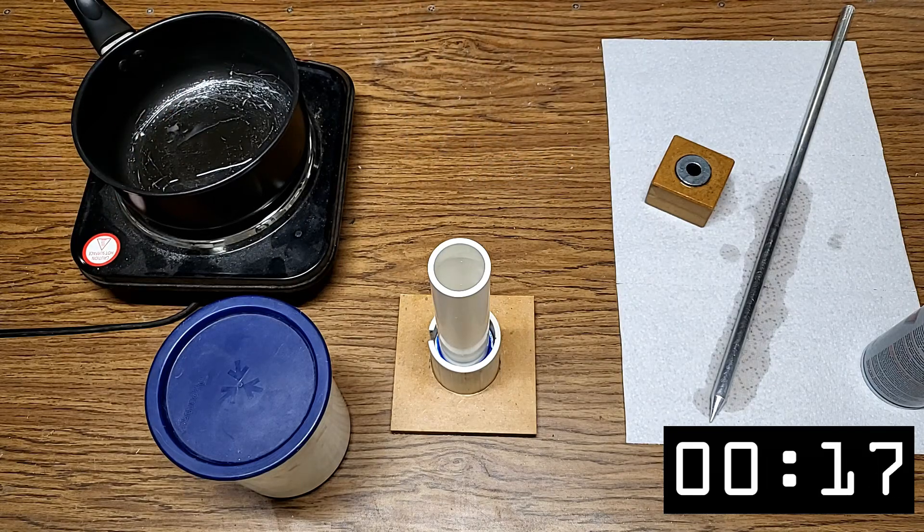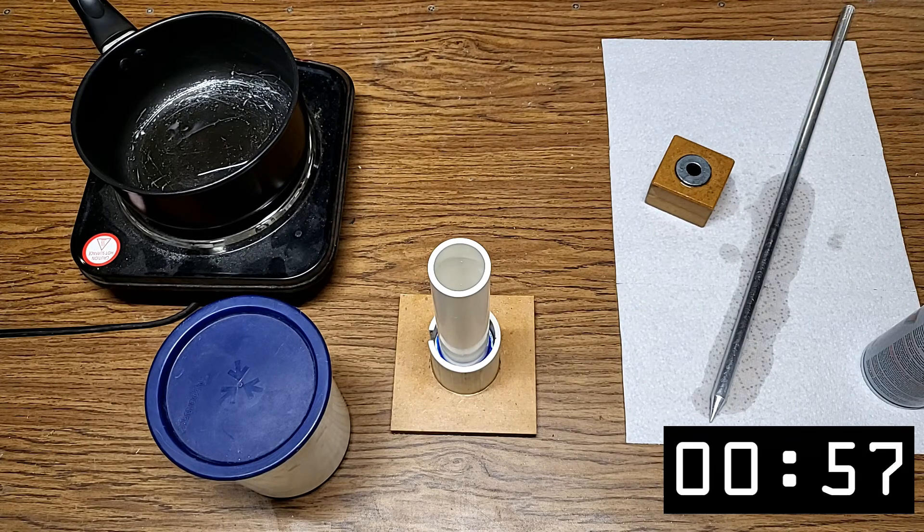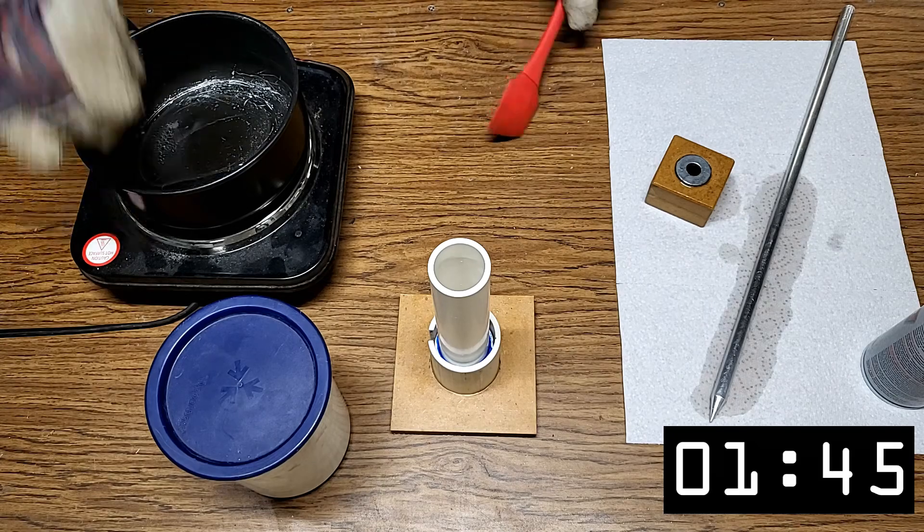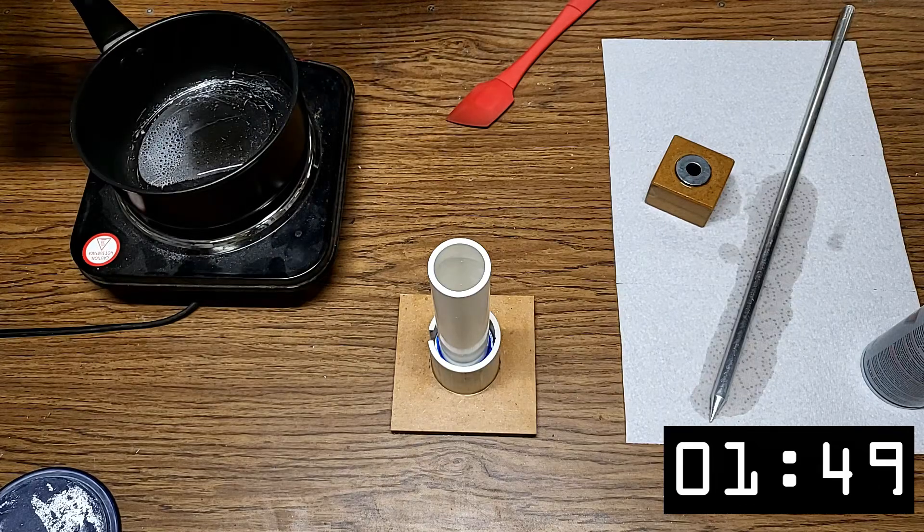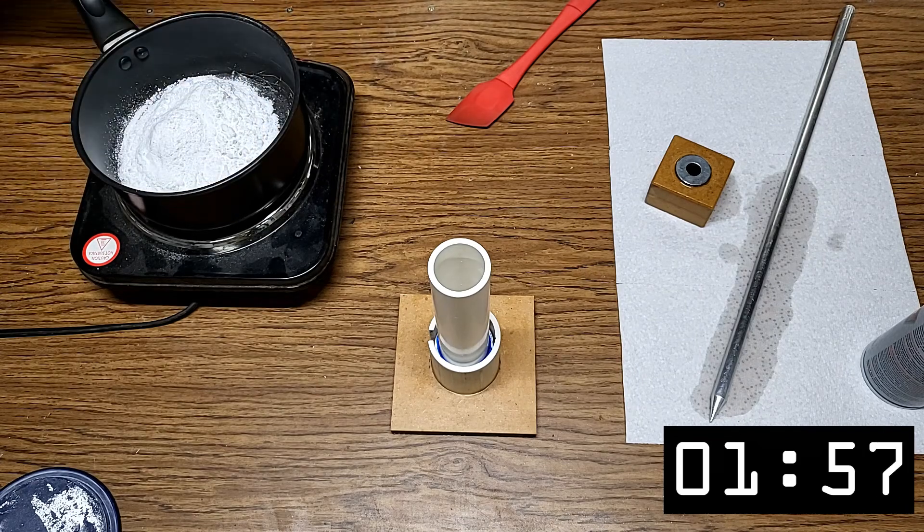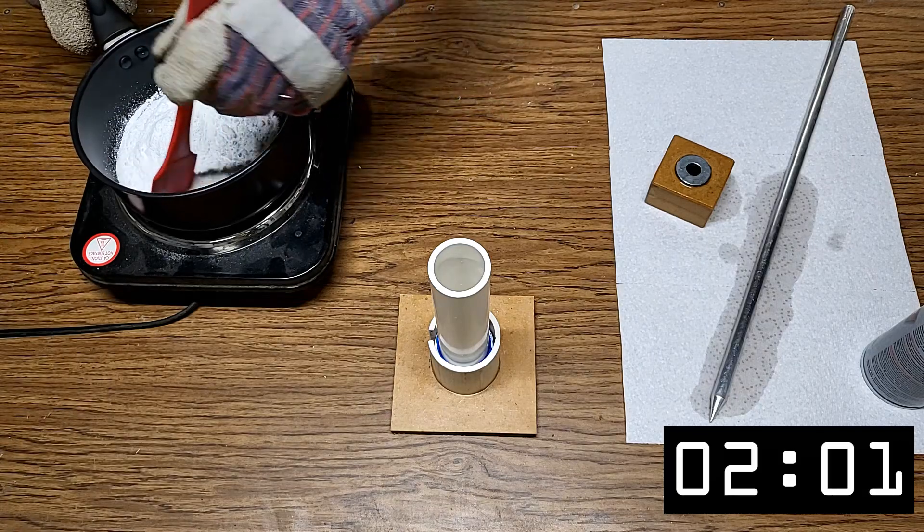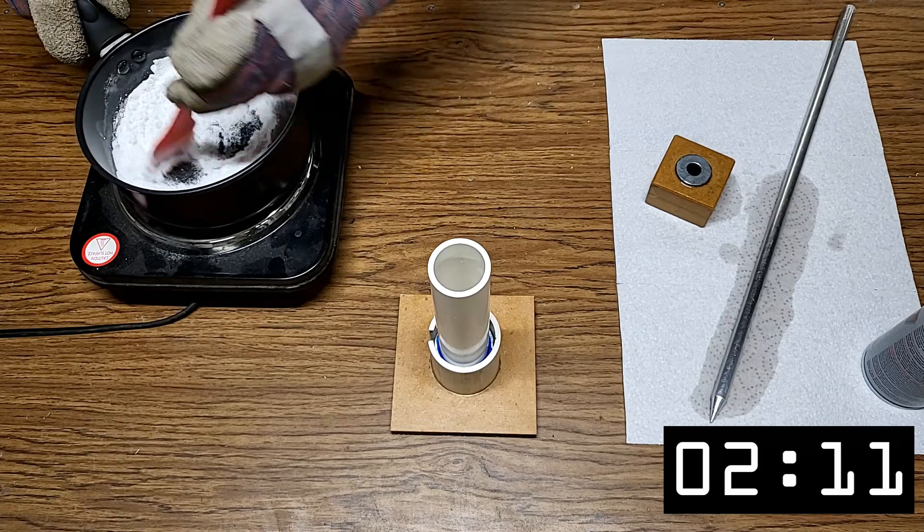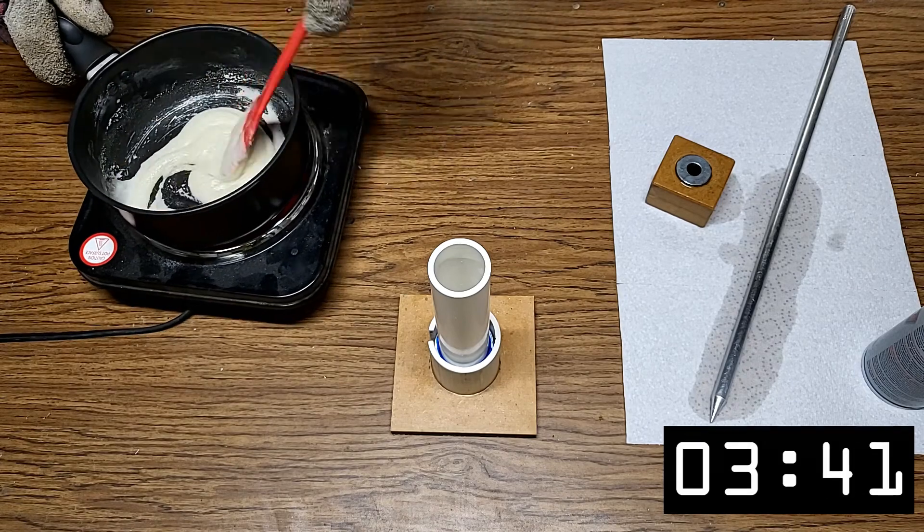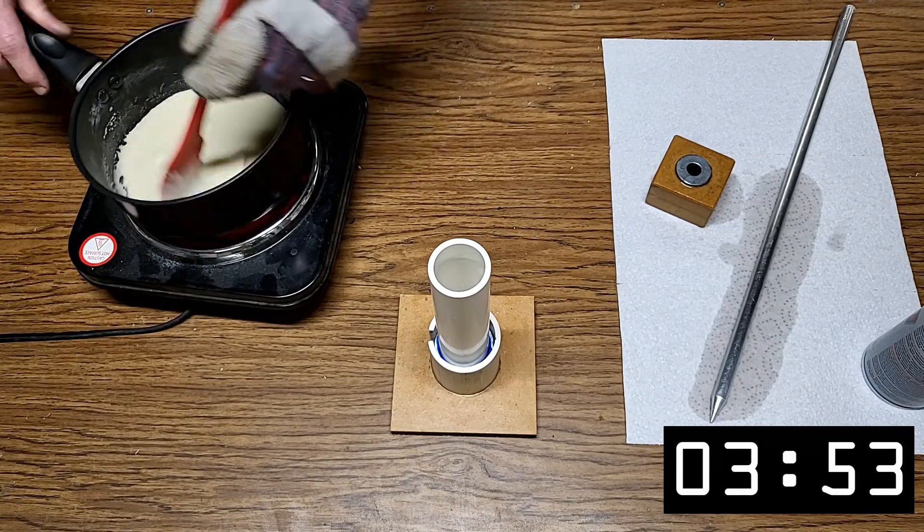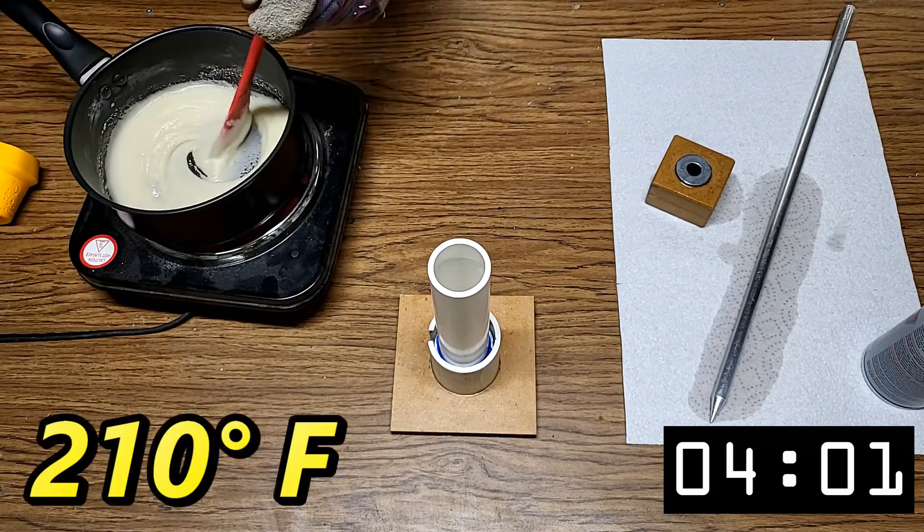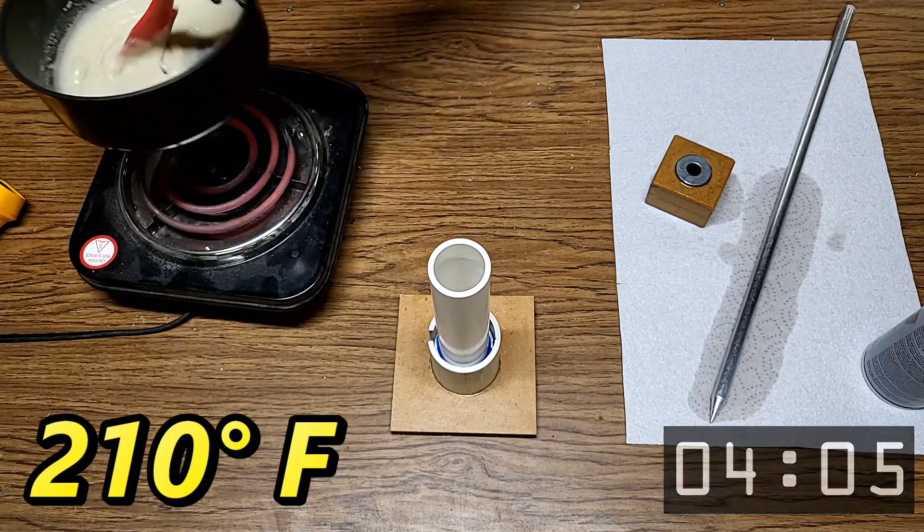We'll wait for some bubbles to just start forming in the corn syrup. Once we see some bubbles start forming in the corn syrup, gently pour the dry ingredients into the pan. Stir the fuel constantly. It will start off very dry, but it will eventually mix together. As soon as it reaches a liquidy consistency, start taking temperature readings with the infrared thermometer. When it reaches 210 degrees Fahrenheit, turn off the cooktop and remove the pan from the heat.